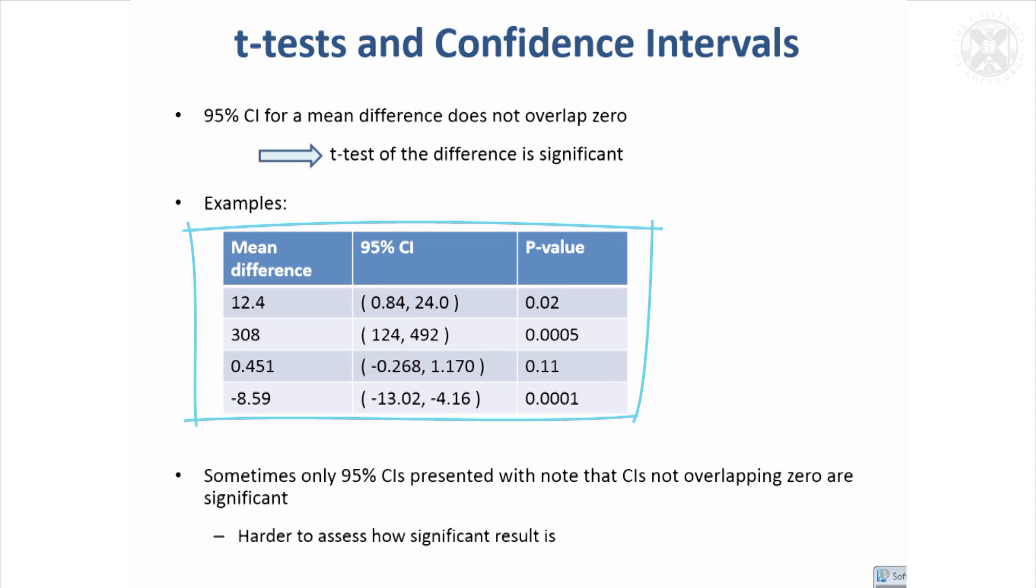And even if your confidence interval's negative, if it doesn't overlap zero, you'll find if you do a statistical test, a t-test, it'll be significant.